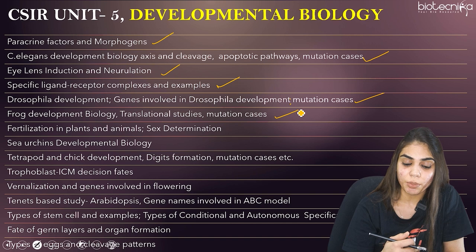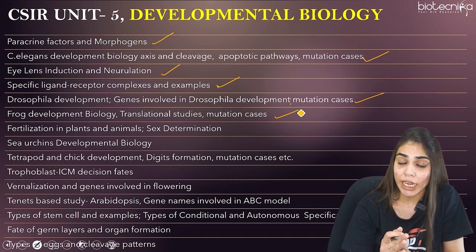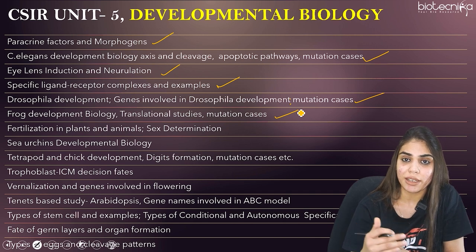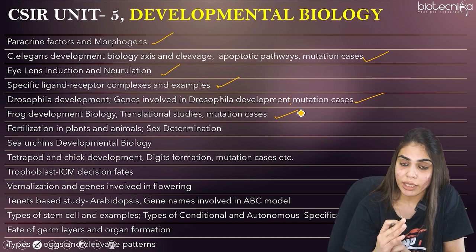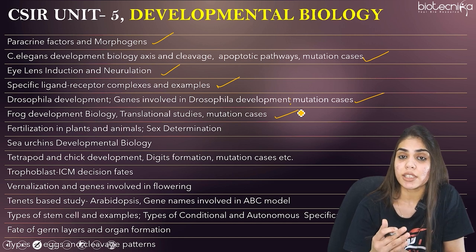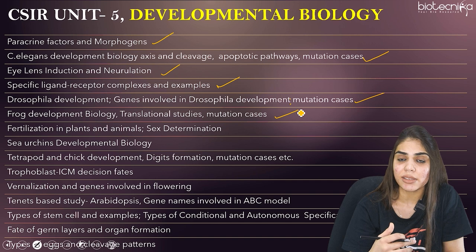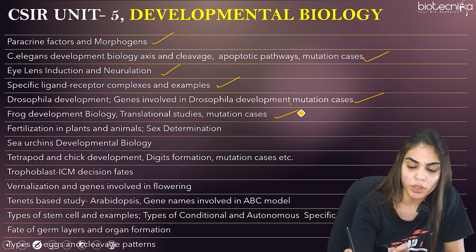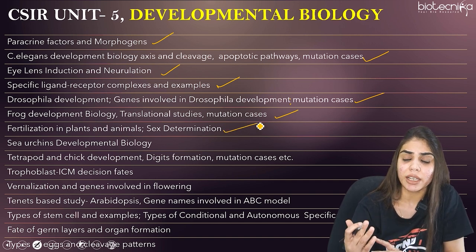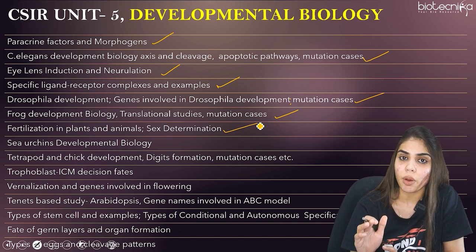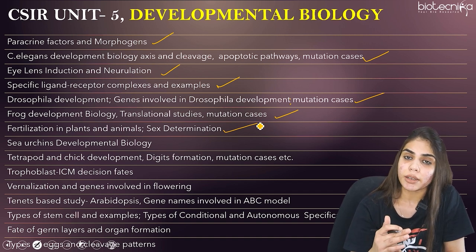The next is fertilization in plants and animals. Although it is a simpler topic, CSIR has become more biased toward it since 2020, asking questions on both plant and human fertilization. Also cover sex determination — you can expect one question from this topic specifically.